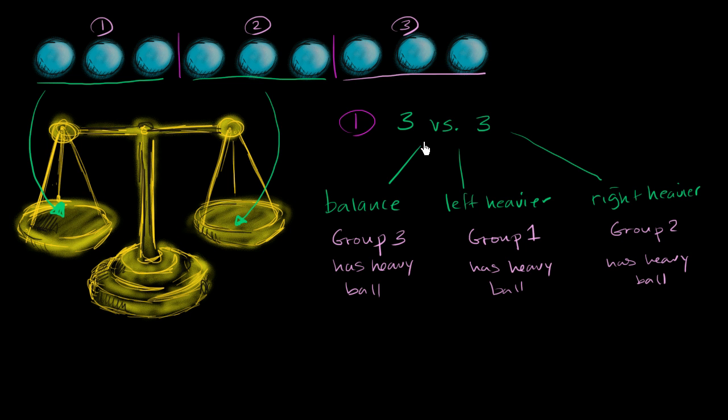Now just like that, with one weighing, we have narrowed it down to one of the three groups. We now know that our heavy ball is one of three balls. It's either one of these three, one of these three, or one of these three. So I just repeat the process, but instead of doing it with three balls at a time, I now do it with one ball at a time.